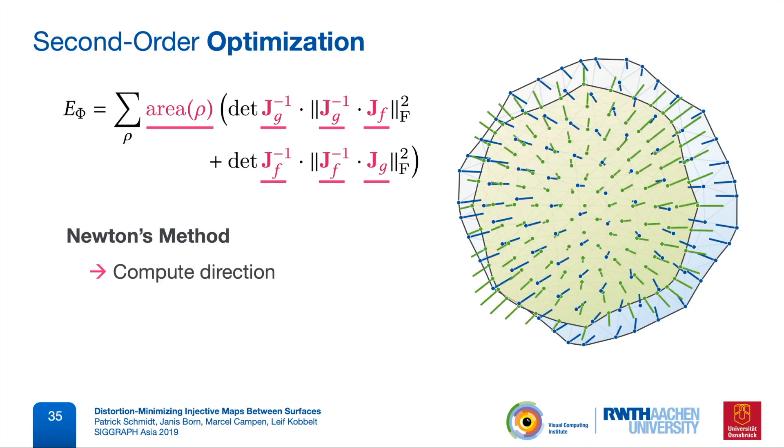So the basic scheme is that in each step we compute an update direction and then perform a line search along that direction. Important to note is that we now have to recompute the list of all overlay polygons for each evaluation of the objective, that is, in each step of the line search. But this is not too bad, because we can do it robustly using exact predicates, and it's still relatively fast compared to computing the actual search direction itself.